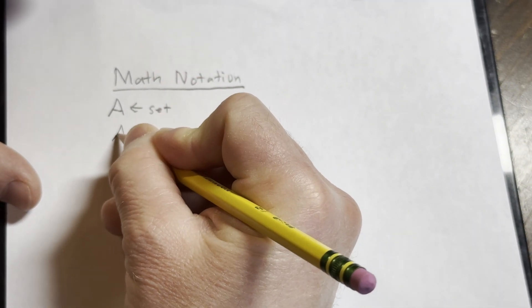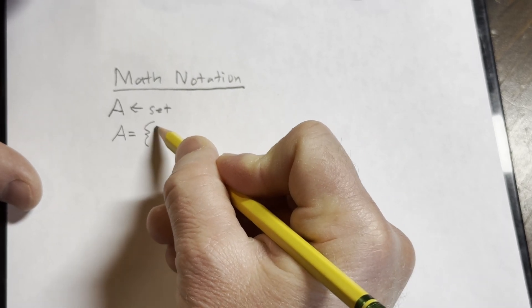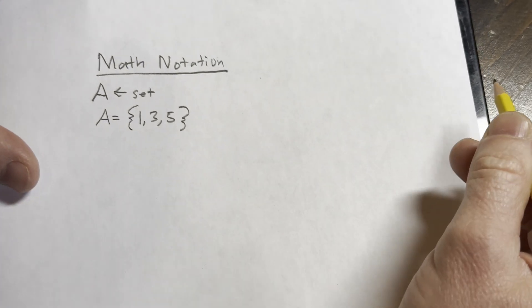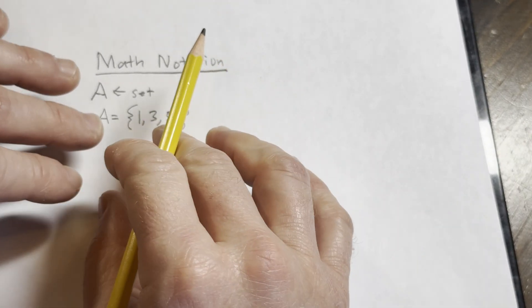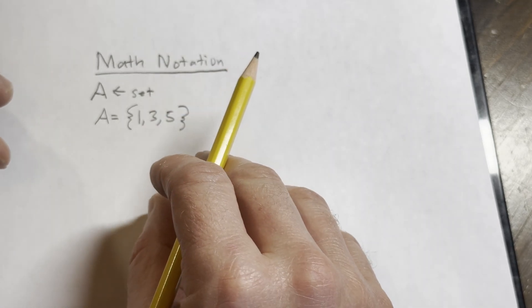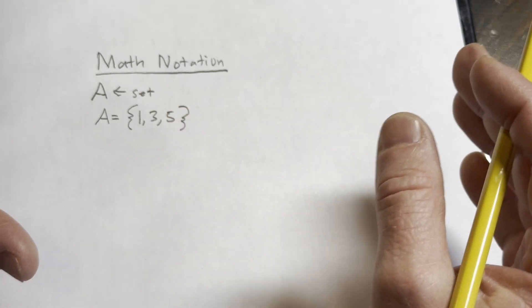For example we can write A as A equals the set containing the numbers one, three, and five. That would be an example of a collection of numbers one, three, and five. I said objects because sets can contain anything not just numbers. We're interested in specific sets mainly in what we're going to be doing.